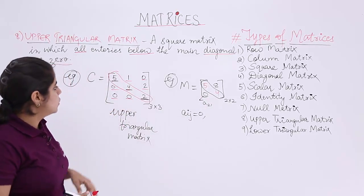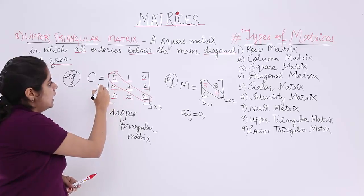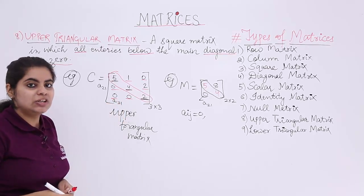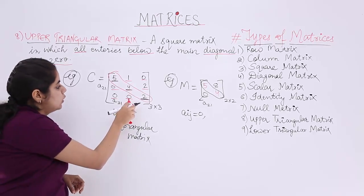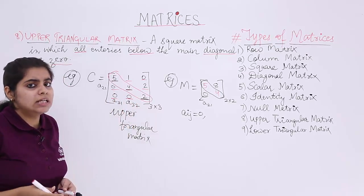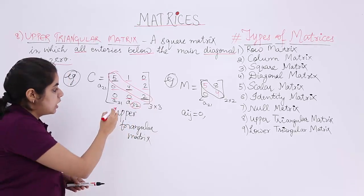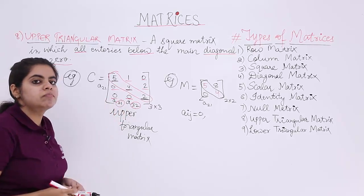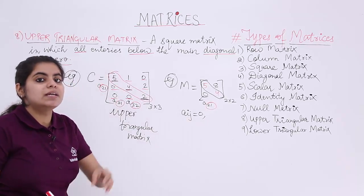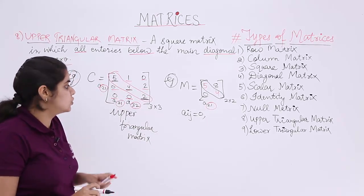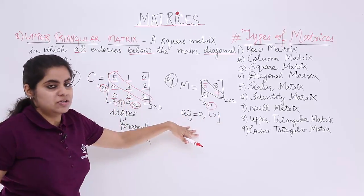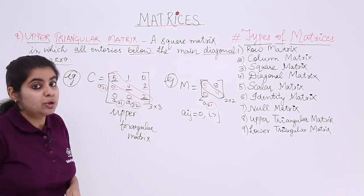Second row first column. This is A21, second row first column. What about this element? It is A31, third row first column. What about this element? The notation is A32. Now observe. 3 and 2, 3 is greater than 2. Here 3 and 1, 3 is greater than 1. Here 2 and 1, 2 is greater than 1. So that means always the first number is greater than the second. That means i is greater than j, and whenever i is greater than j, I will have my upper triangular matrix definition wherein Aij would be 0.